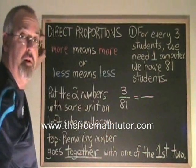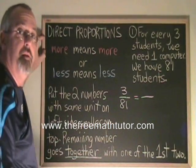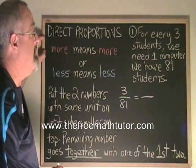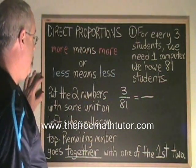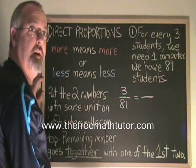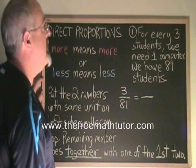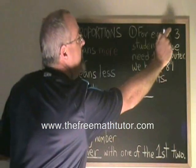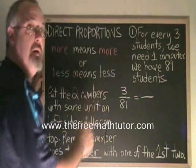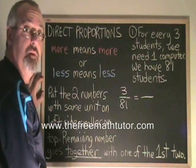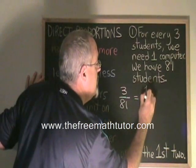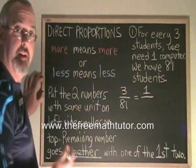Putting the smaller number on top is the same — I like to do it that way, I always do it that way, and I make less mistakes that way. The next step is the remaining number goes together with one of the first two. We can see that for every three students we need one computer, so three students and one computer go together. Since the three is on top, I'm putting the one on top — they're together.